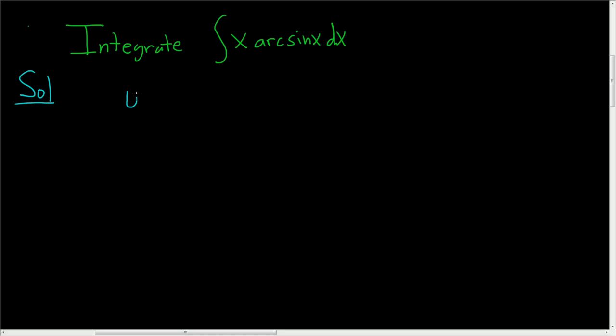We'll start by using integration by parts. So we have to pick our u, and u has to be something that's easy to differentiate. And we also have to pick our dv,